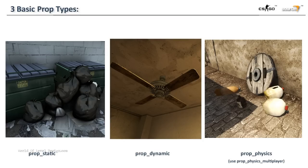Prop dynamic can be animated and can be used within the input-output system, which is a scripting system inside Source. Prop physics have physics tied to each prop — that means you can touch them, you can shoot them, and they will react accordingly and move around.